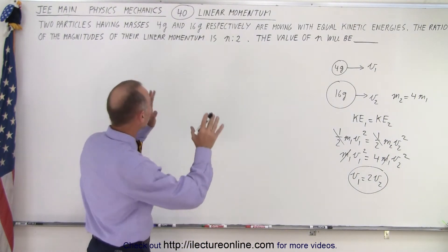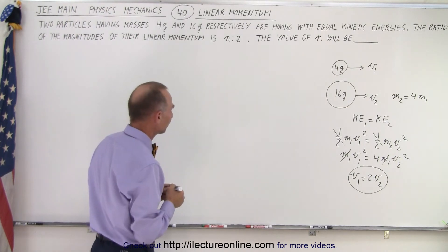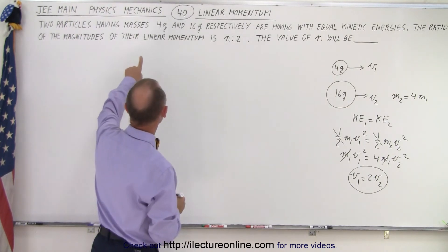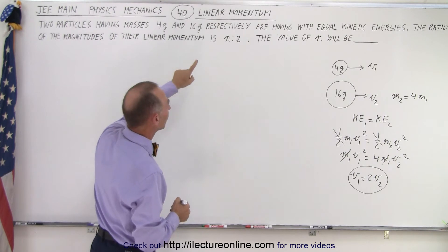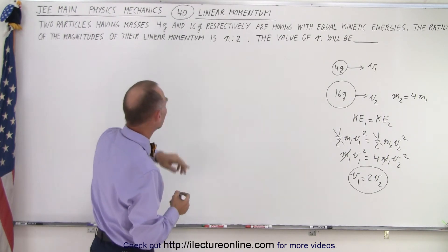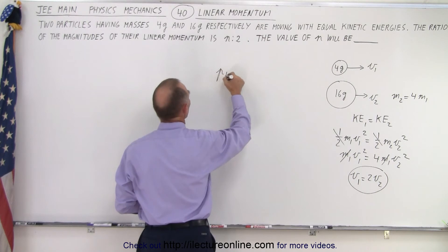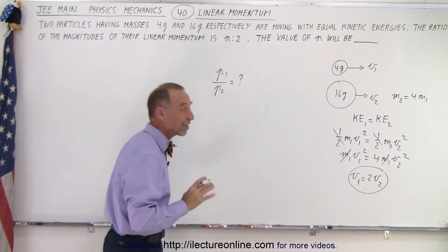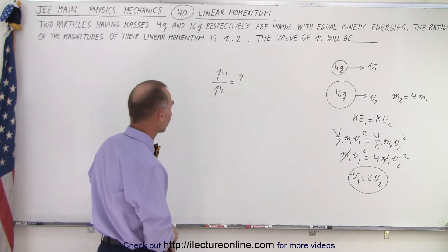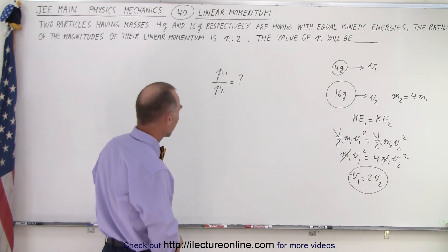So now let's go to the linear momentum portion. So we're looking for the ratio, the magnitudes of their ratio, the ratio of their magnitudes is n to 2. So what we're looking for is we want p1 to p2 is equal to question mark. What is the ratio between the two momentums, the linear momentums of the two?